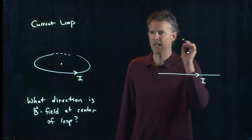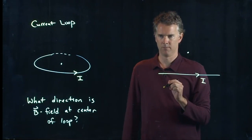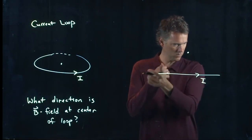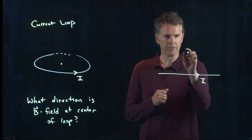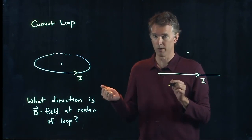Take one straight wire and think about the B field at that point right there. Is that B field coming out of the screen or going into the screen? We just did this a second ago, right? Long current carrying wire. Is the B field here coming towards you or going away from you?